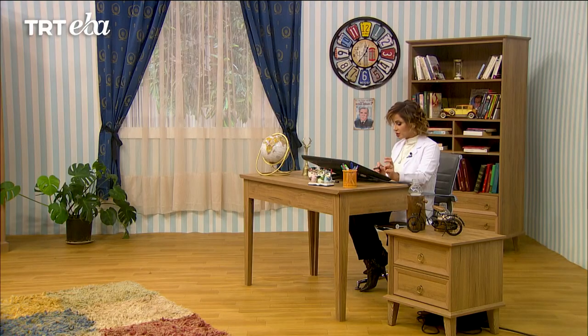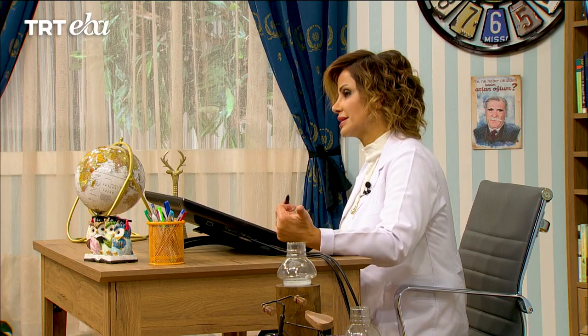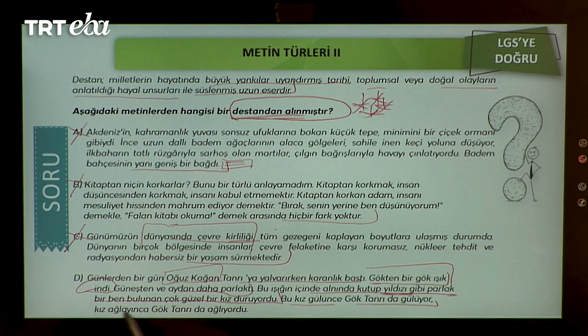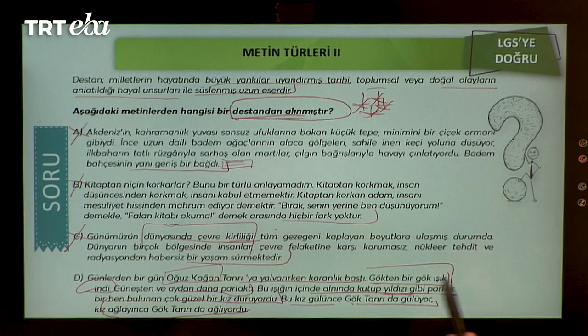D seçeneğine bakalım: 'Günlerden bir gün Oğuz Kağan Tanrı'ya yalvarırken karanlık bastı. Gökten bir gök ışık indi.' Gökten ışık inmesi olağanüstü bir durumdur. Güneşten ve aydan daha parlak olan ışığın içinde alnında kutup yıldızı gibi parlak bir ben bulunan çok güzel bir kız duruyordu; kız gülünce Gök Tanrı da gülüyor, kız ağlayınca Gök Tanrı da ağlıyordu. Olağanüstülükler peş peşe gelmiş — bu metnimiz destandan alınmıştır. Doğru seçenek D.